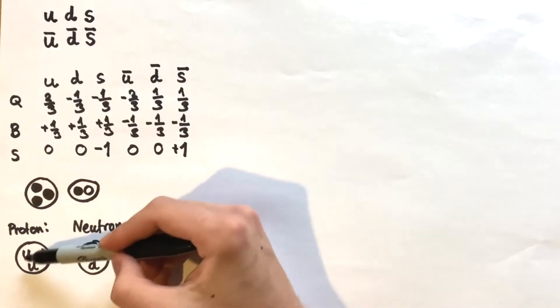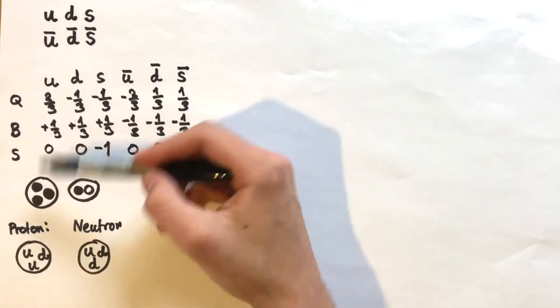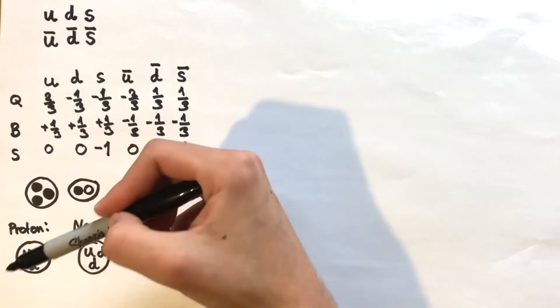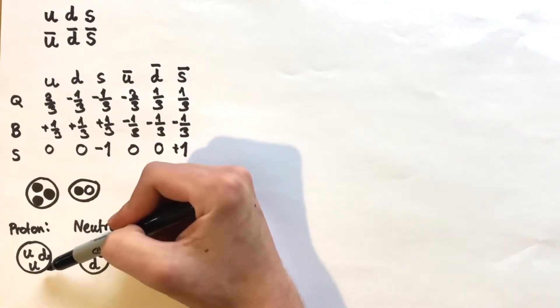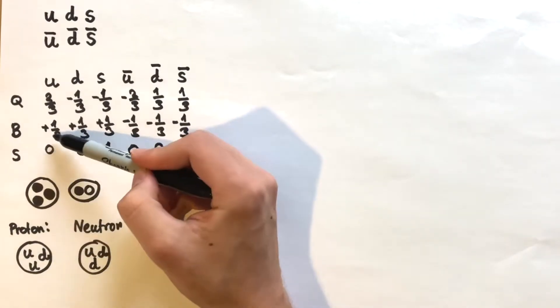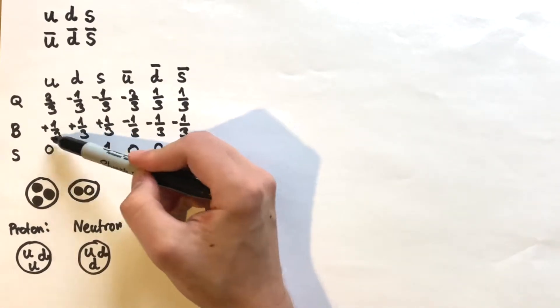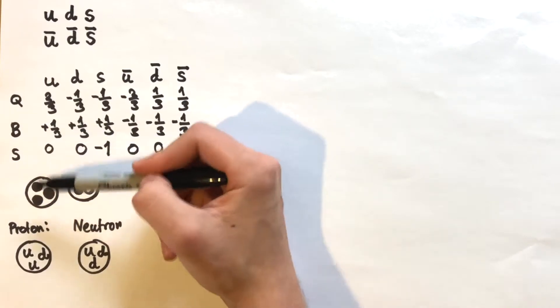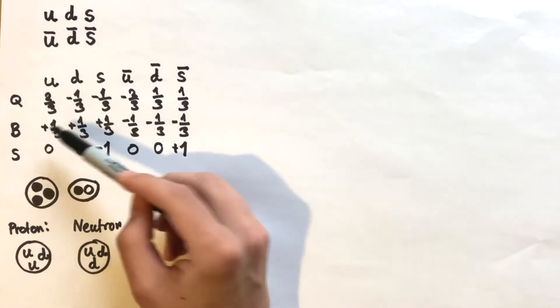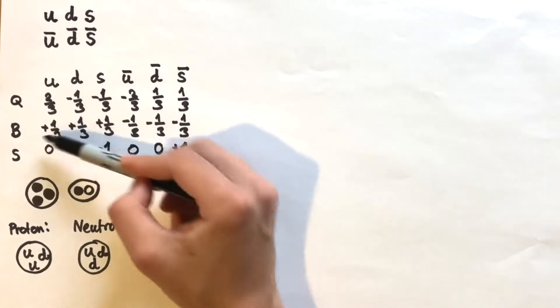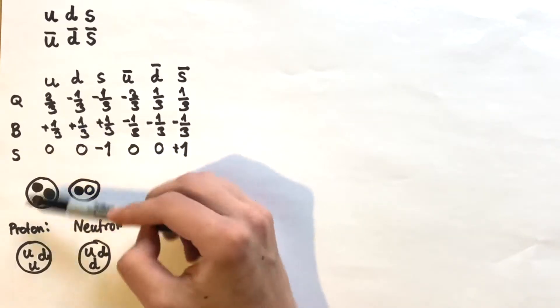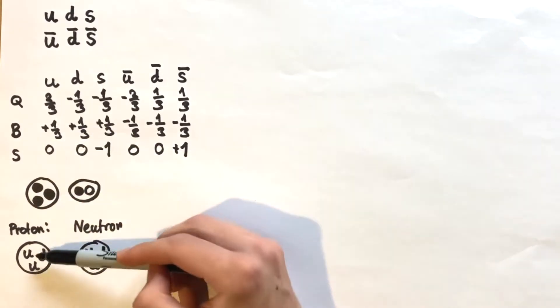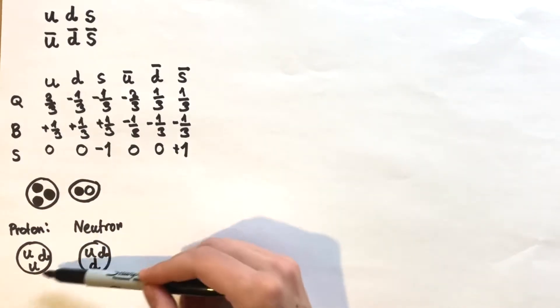For baryon number: both the neutron and proton contain three quarks, each with baryon number 1/3, so three times 1/3 gives a total baryon number of one for both the proton and the neutron.